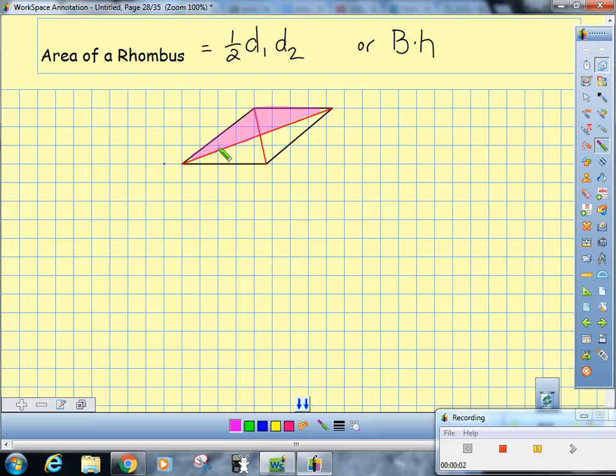So just use your problem-solving skills. If you don't know the area formula, you do know that the diagonals of a rhombus are perpendicular to each other, and so use that.